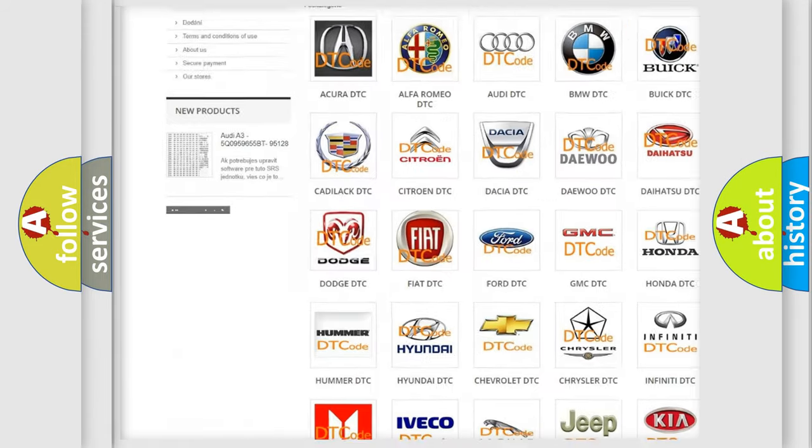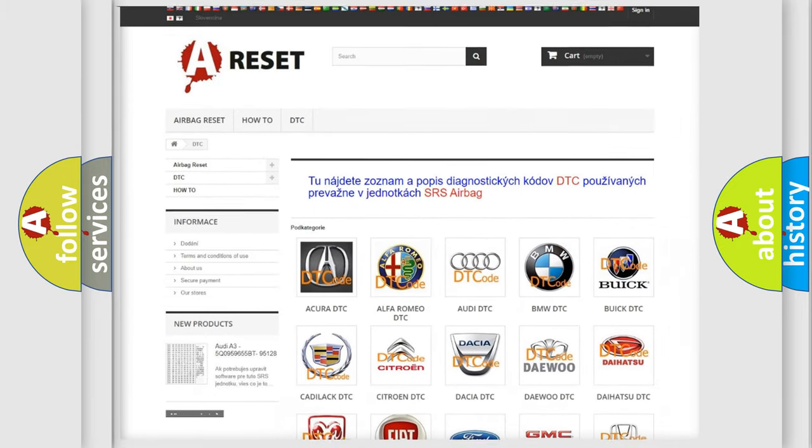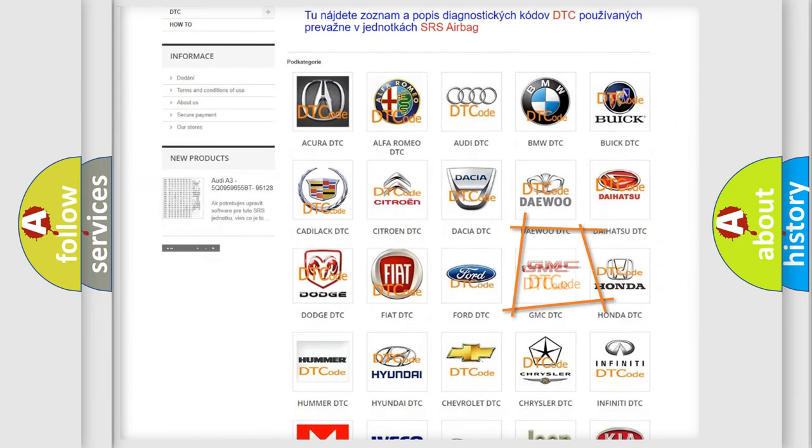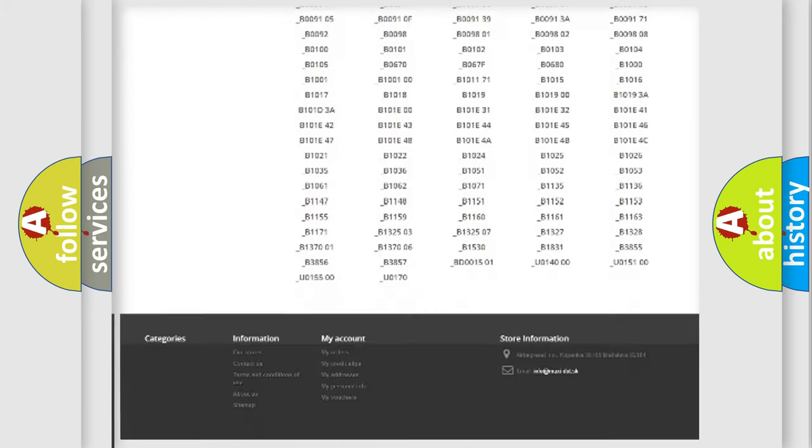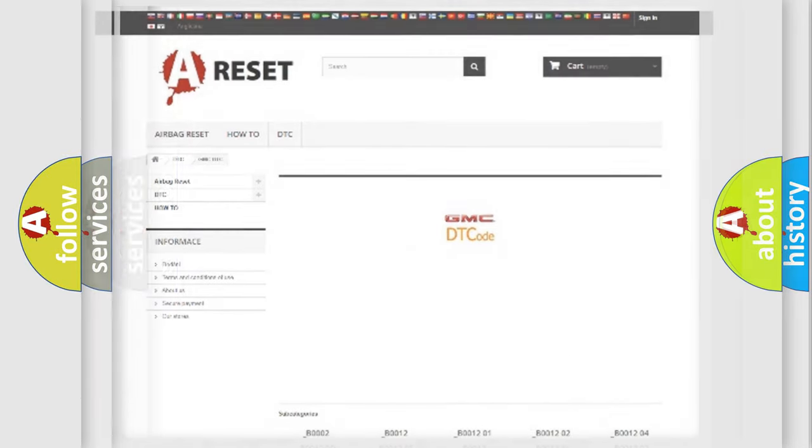Our website airbagreset.sk produces useful videos for you. You do not have to go through the OBD2 protocol anymore to know how to troubleshoot any car breakdown. You will find all the diagnostic codes that can be diagnosed in GMC vehicles, and also many other useful things.